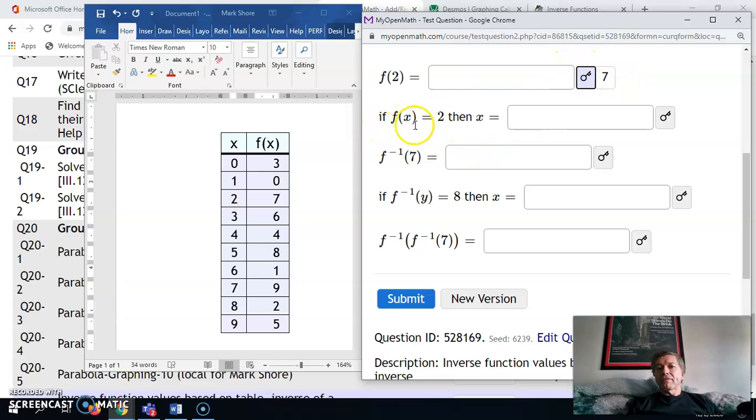This one says, if f(x) equals 2, then what does x equal? Well, f(x) means the y value here. So just looking for 2 in this column right here, you can see here's a 2. So x is equal to 8.